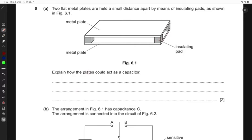They're saying that explain how the plates could act as a capacitor. We know for a capacitor we have two metal plates that are separated apart and you apply some potential difference to these two metal plates. When you do that, when you apply that potential difference between the two plates, it causes the charges to be separated on these plates.